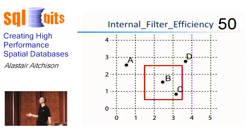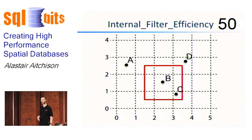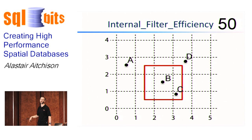The internal filter efficiency is another measure. This one says, of the rows that were in the final output, how many of them were selected from the internal filter? In that case, it's B out of B and C. So we've got 50% for our internal filter efficiency.